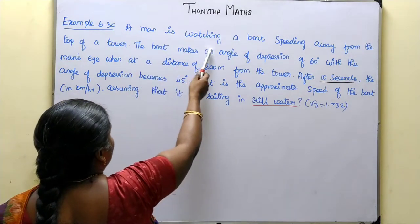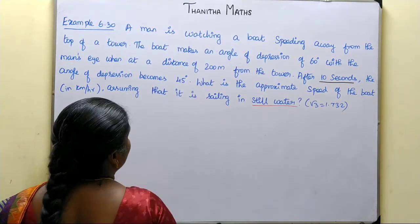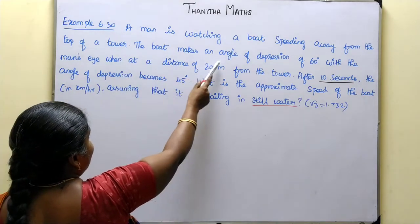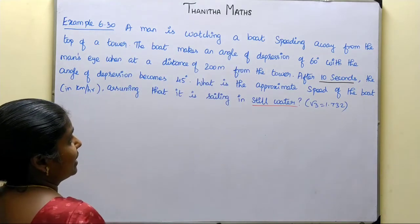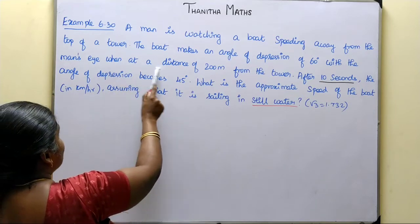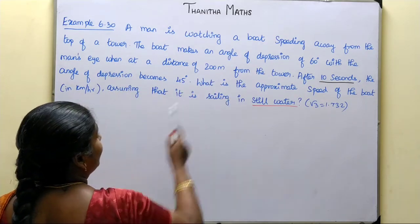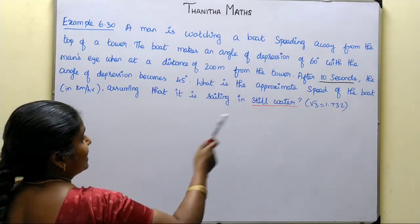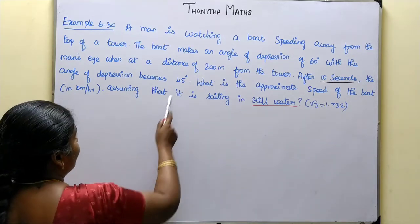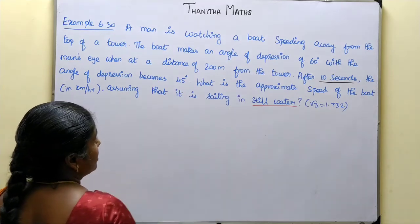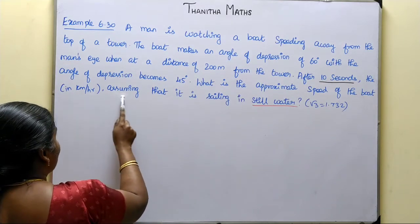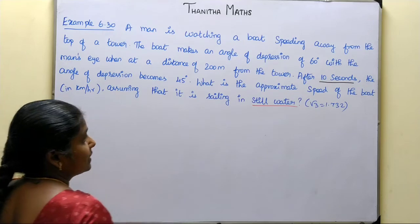A man is watching a boat speeding away from the top of a tower. The boat makes an angle of depression of 60 degrees with the man's eye when at a distance of 200 meters from the tower. After 10 seconds, the angle of depression becomes 45 degrees. What is the approximate speed of the boat in km per hour, assuming that it is sailing in still water?